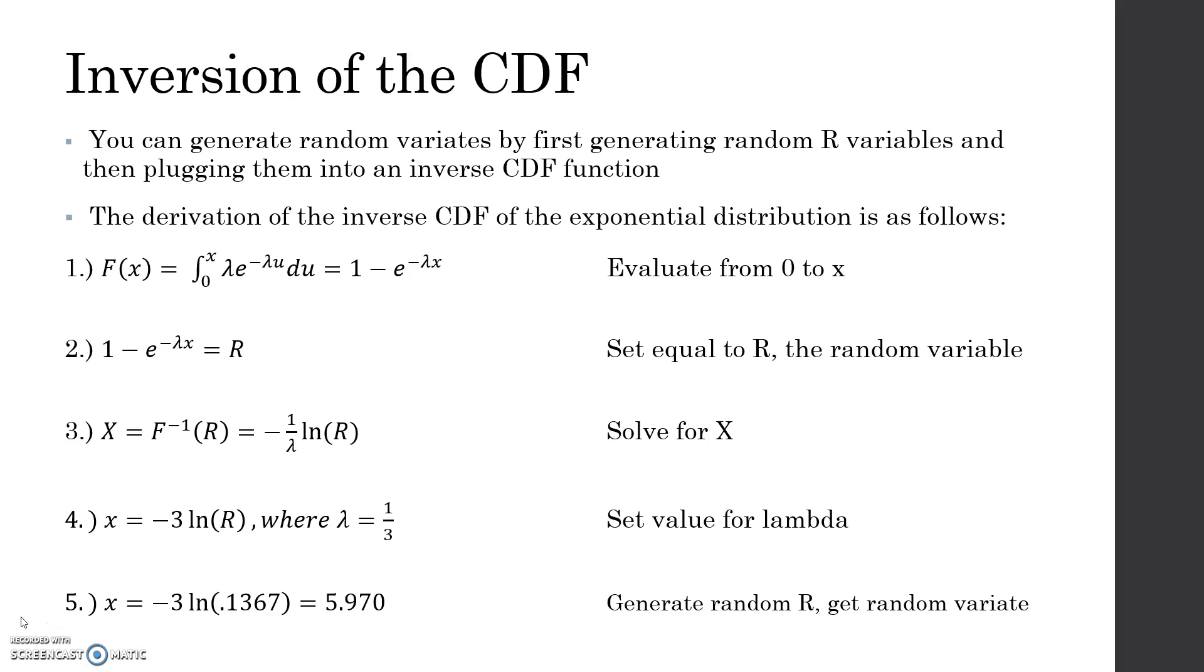This is an example that we have in the book. You start here with the exponential distribution. You replace X with U and you integrate from 0 to X. That will give you 1 minus E to the negative lambda X.